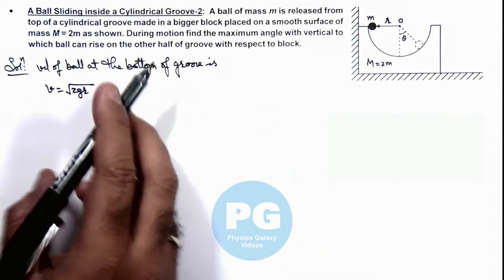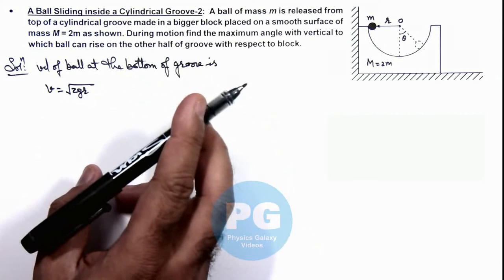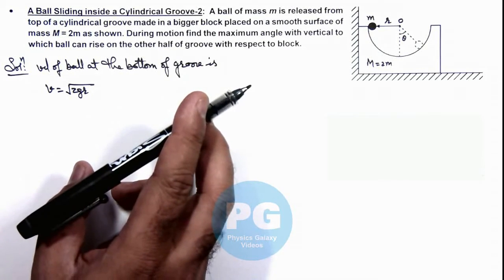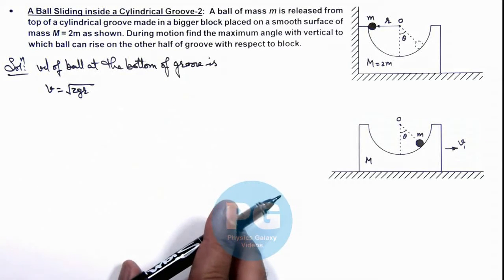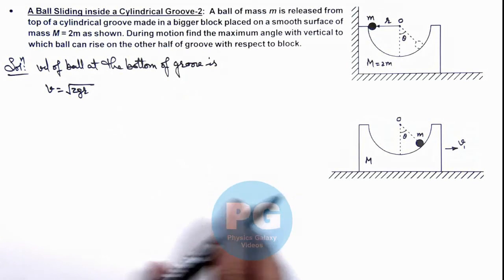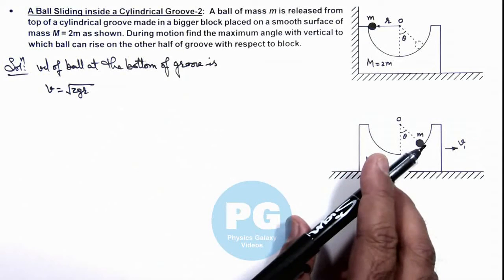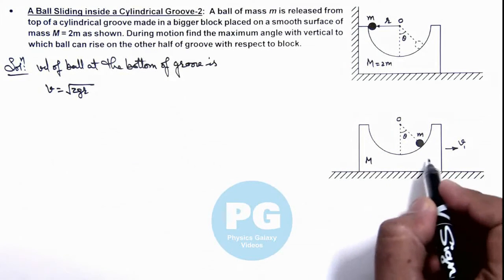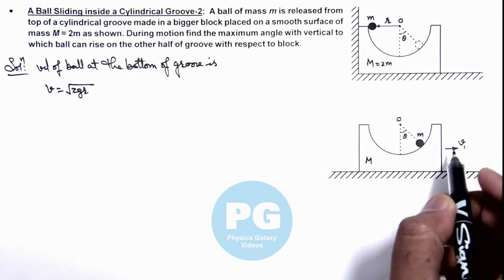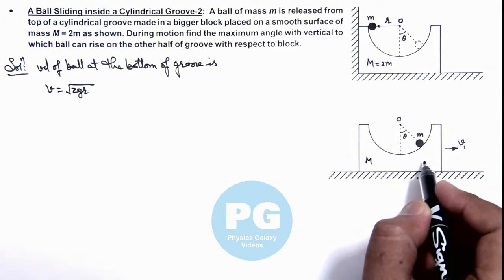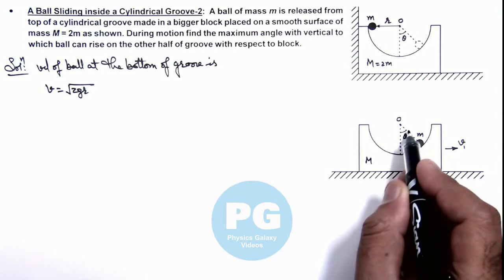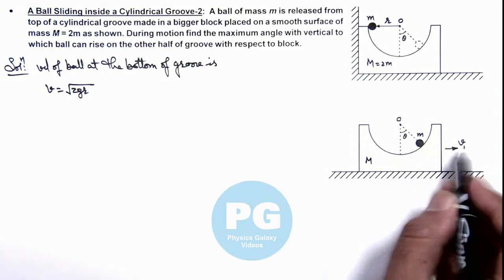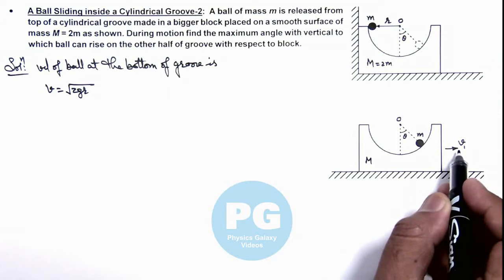Now when it starts sliding on the other half of groove, the bigger block will also start moving. Here we can see this picture gives us an idea about the maximum height which it is raising on the other half of groove. Say with respect to the bigger block, this ball comes to rest at an angle θ. Then in this situation, at this point both of these blocks would be moving toward right with a speed v₁.